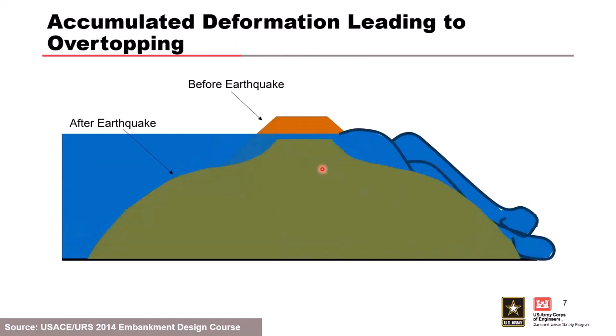Looking at accumulated deformation: large strength loss doesn't occur anywhere under or in your dam, but because of the high seismic event, deformation occurs. The dam moves around and settles enough — you can have quite a bit of settlement even without large strength loss or liquefaction — and that's enough to reduce the crest and allow overtopping to occur. You'd then follow through an event tree of overtopping to determine if overtopping is going to fail the dam.